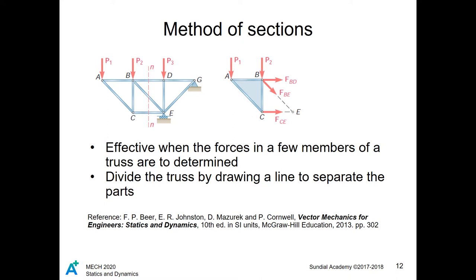So in the example image here, if we take the moment about point B, we see that the moment contributions of force P2, force BD, and force BE are equal to zero. Thus, we see a direct relationship between the moment of force P1 and the force CE, and can solve one force if given the other force.